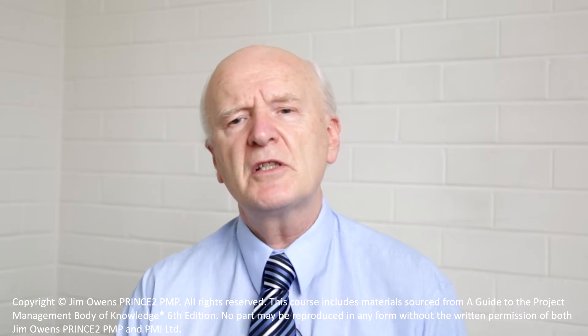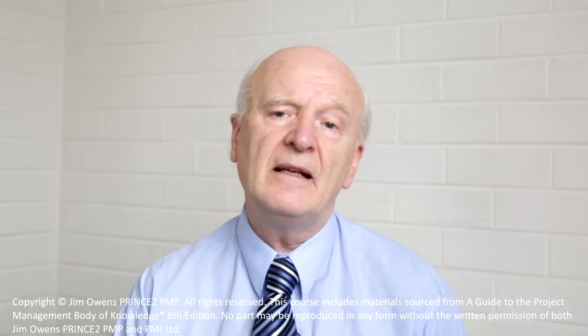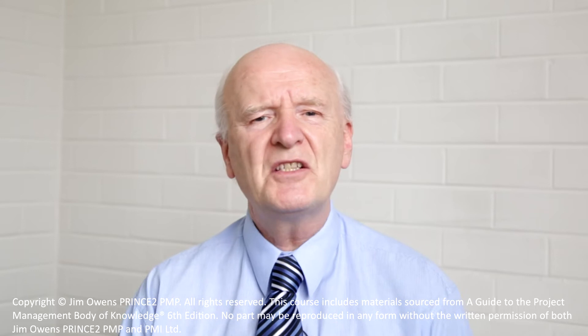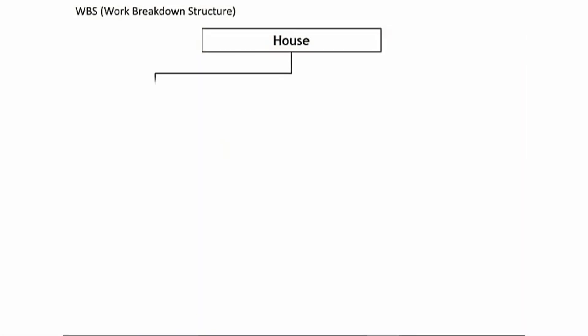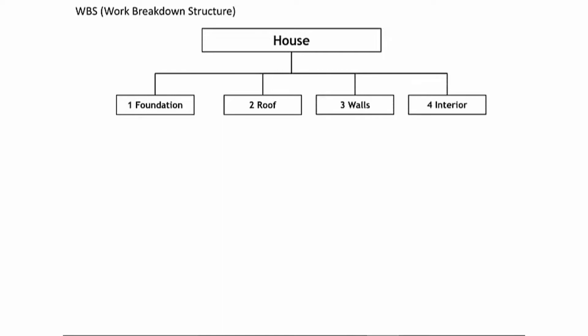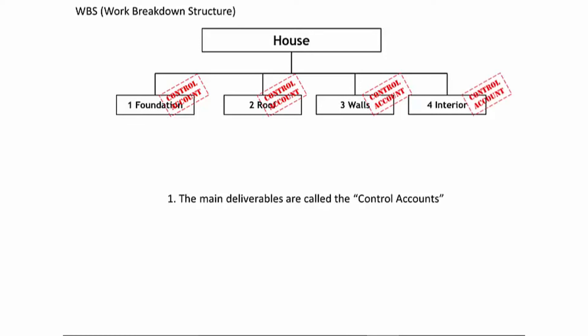A house is too complex for people to deliver as-is, so we need to break the product down. The process of repeatedly breaking down a product into simpler components is called decomposing. Let's decompose our house into the main sub-deliverables: one — the foundation; two — the roof; three — the walls; four — the interior. These main sub-deliverables in the Work Breakdown Structure are called control accounts. The foundation, roof, walls, and interior are each a control account.